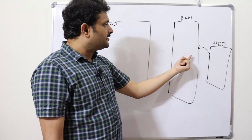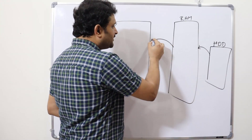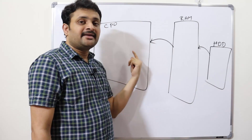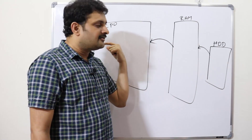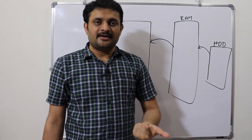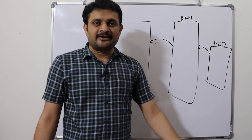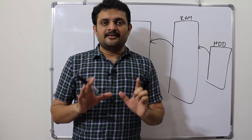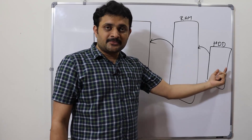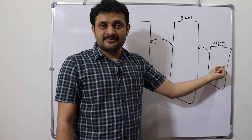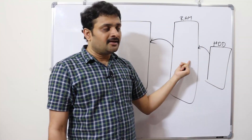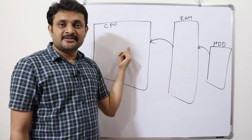From the RAM, the instructions will be passed to the CPU, where they are executed one by one. If required, the result will be stored back to memory; otherwise, it will simply pass through I/O. So the basic operational flow is: program saved on hard disk → loaded to RAM → passed to CPU.